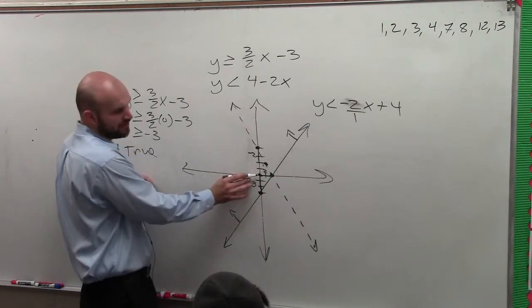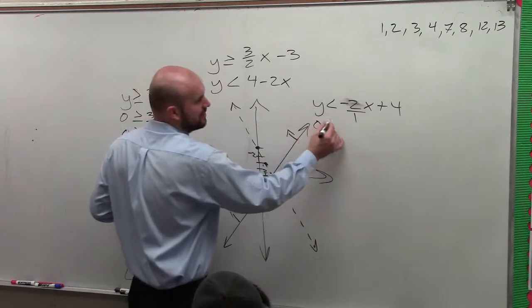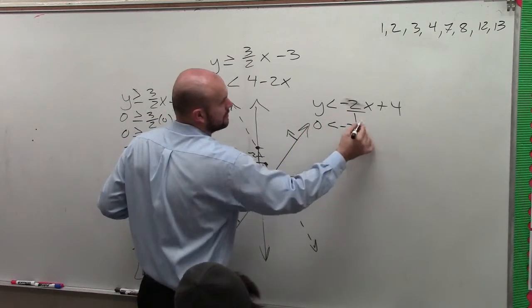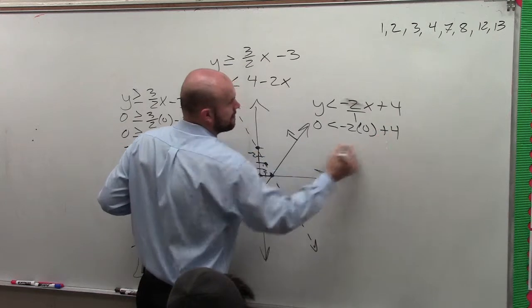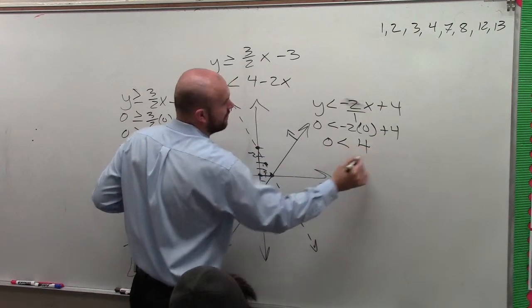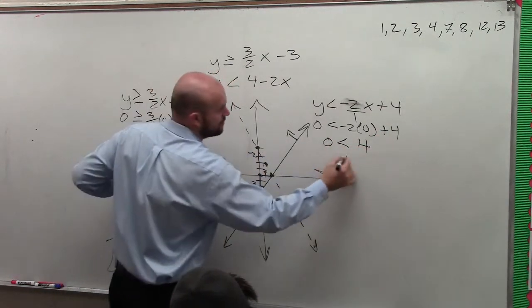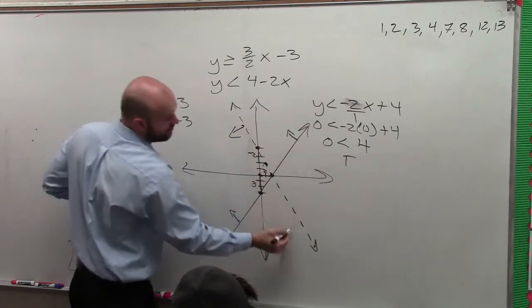Now, I've got to use my test point, which again, I can still use 0, 0. So I have 0 is less than negative 2 times 0 plus 4. 0 is less than 4. And that again is true. So therefore, you shade towards your solution point.